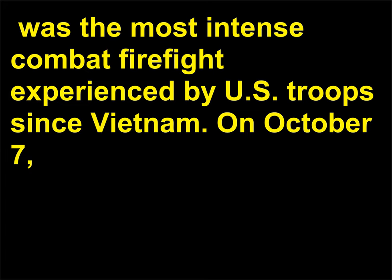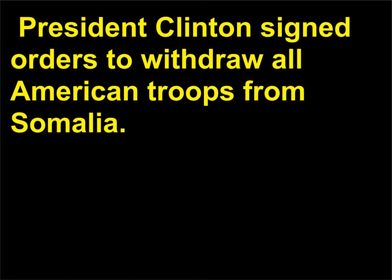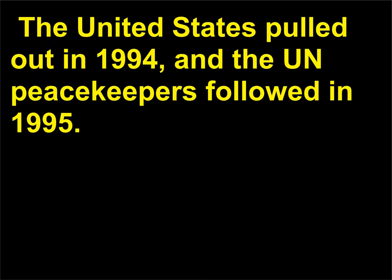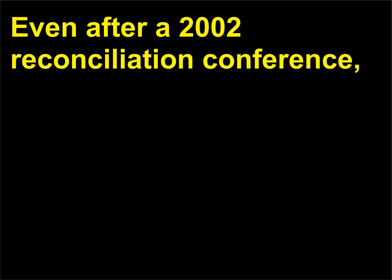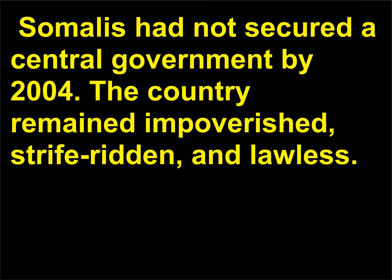On October 7, President Clinton signed orders to withdraw all American troops from Somalia. The United States pulled out in 1994, and the U.N. peacekeepers followed in 1995. Even after a 2002 reconciliation conference, Somalis had not secured a central government by 2004. The country remained impoverished, strife-ridden, and lawless.